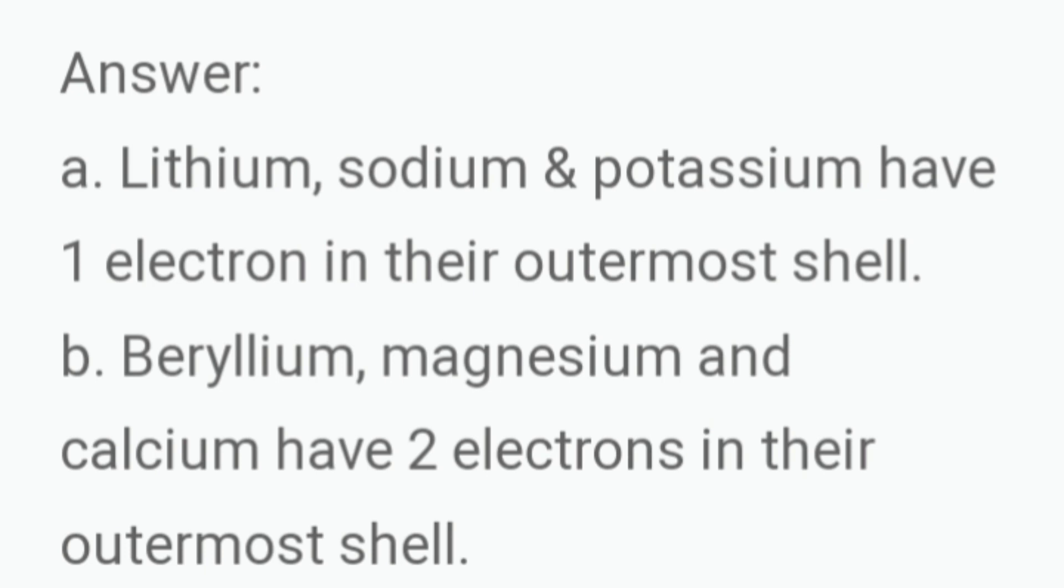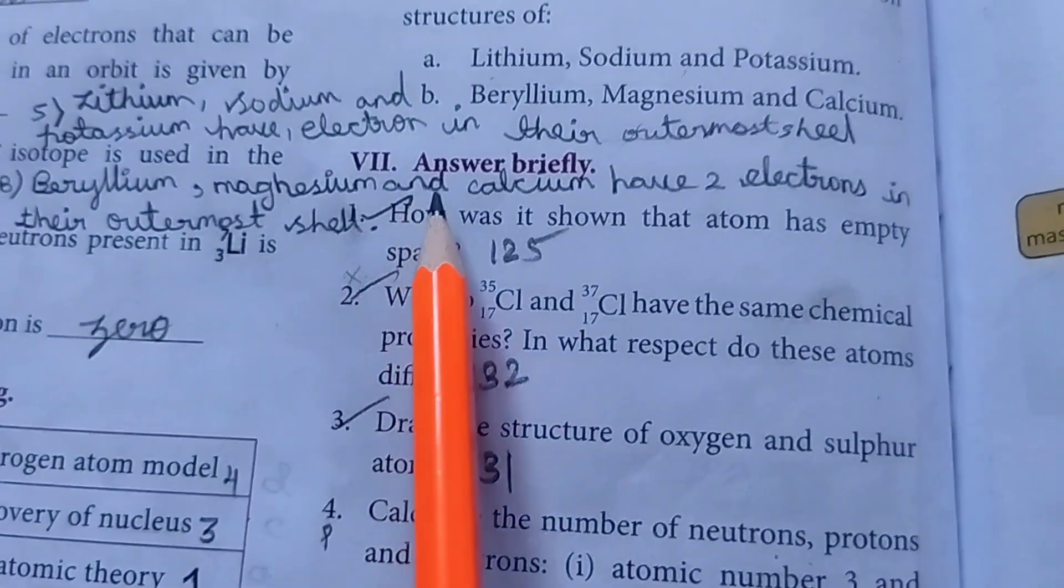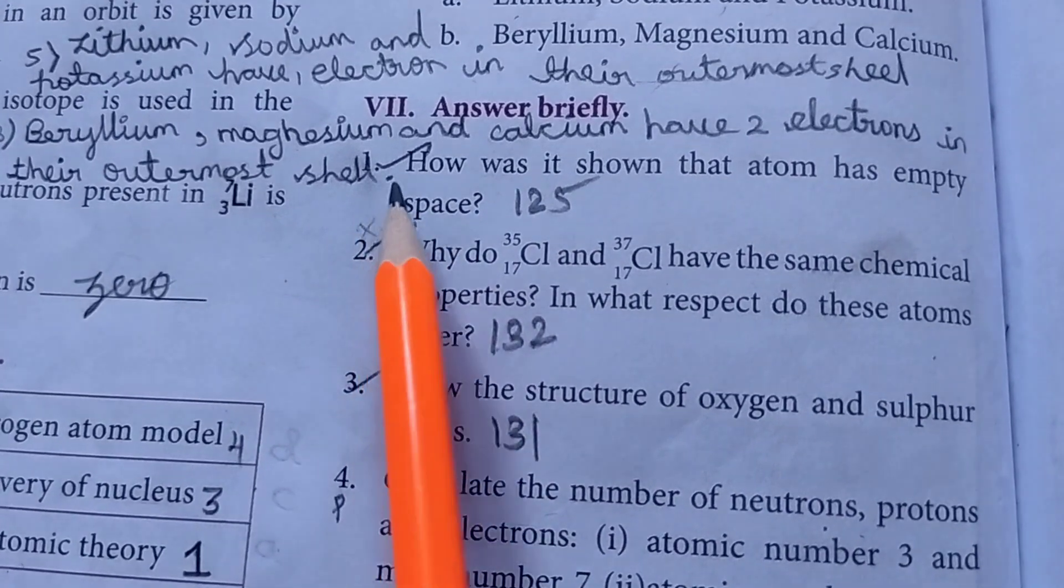Then B. Beryllium, magnesium and calcium have 2 electrons in their outermost shell. Then 7th roman letter. Answer briefly.